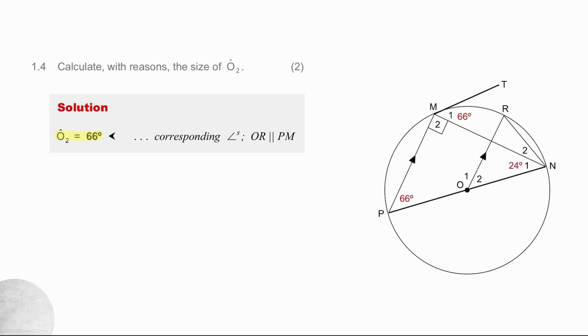Once you've identified the method, it's very quick. Angle O2 is 66 degrees. Corresponding angles. Remember, you must name the lines that are parallel. OR parallel to PM.